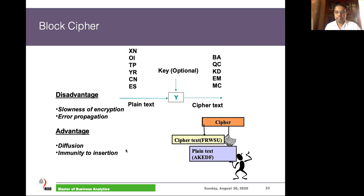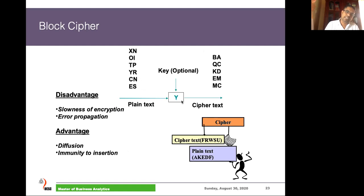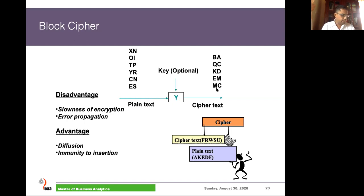In block ciphers, we take a set of characters at a time for encryption, apply the key, and produce a set of cipher text characters. If the particular algorithm requires eight bytes in one cycle, we must enter all eight bytes — we cannot encrypt one byte; we have to wait until all eight bytes are received before executing the encryption. Because of that, block ciphers are slower compared to stream ciphers.